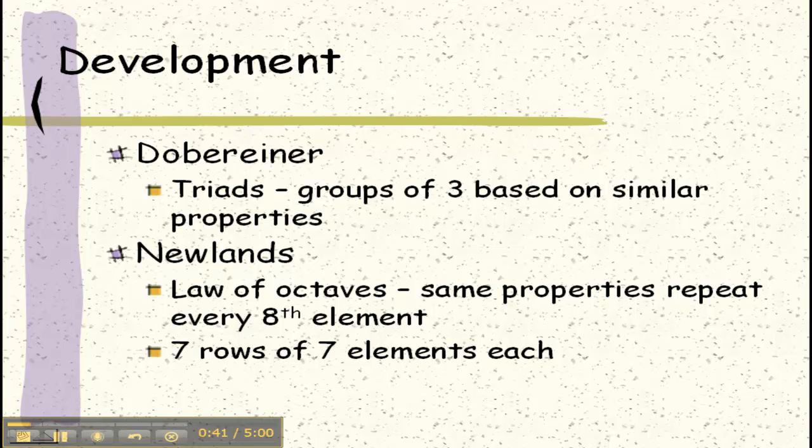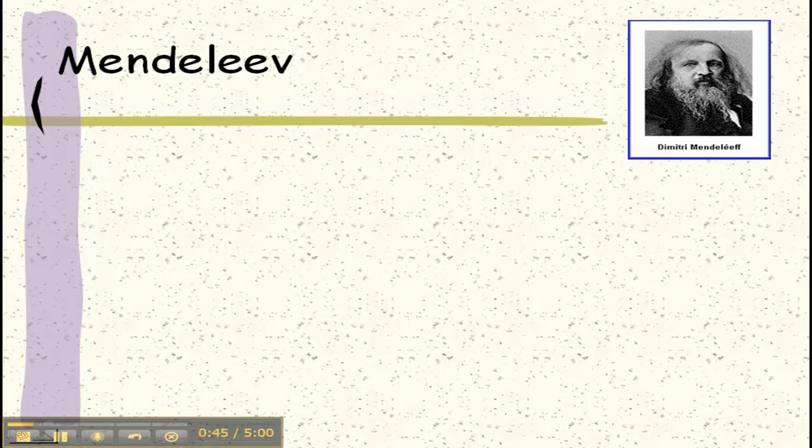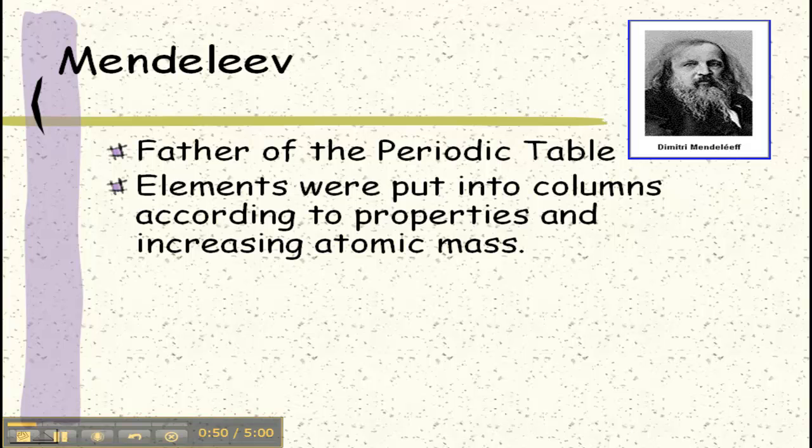The same properties didn't actually always repeat every eighth element. So Mendeleev came along and he's who we consider the father of the periodic table.